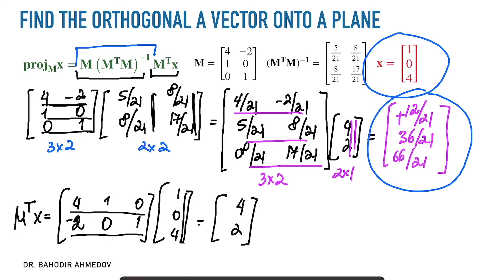This is how we project vectors onto planes. In general, this idea can be generalized to finding the orthogonal projection of a vector into any subspace described as a matrix M. Thank you very much. I hope that this was helpful for you.